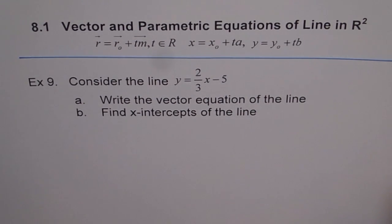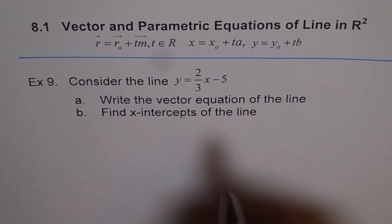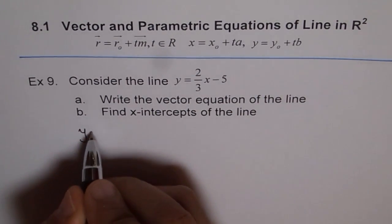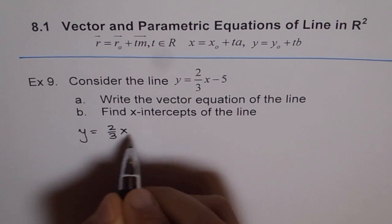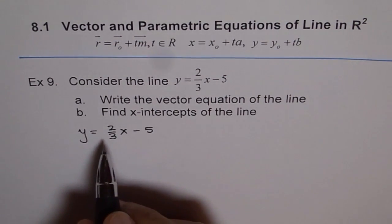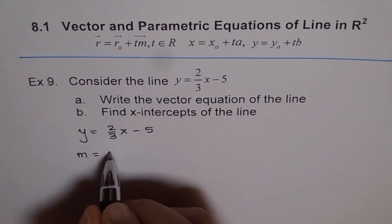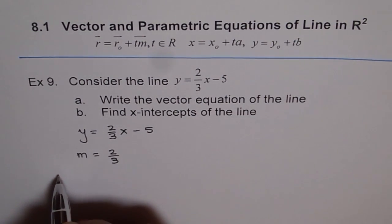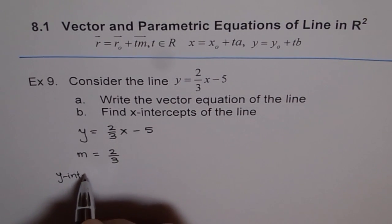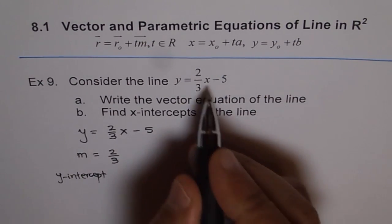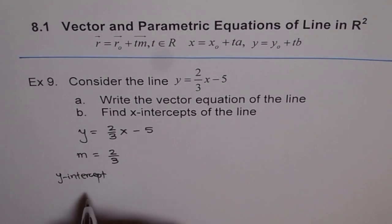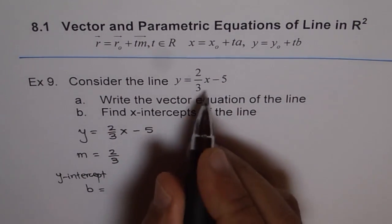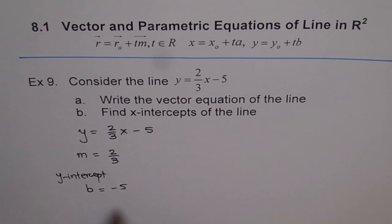This line given to us is in slope-intercept form and from the line y equals 2 over 3x minus 5, we can see the slope of the line which is m is equal to 2 over 3 and a point which is the y-intercept. So, y-intercept is b which is minus 5.